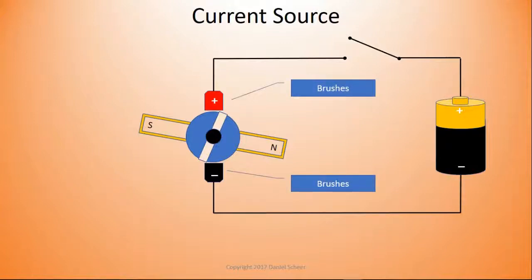I've labeled the brushes here with a red and a plus sign to indicate the positive current side, and then a negative and black brush to indicate the negative side. So now we have an electric magnet, a.k.a. armature.